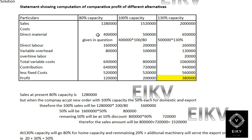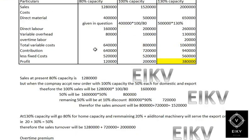Direct material at 80% capacity is $4,00,000. Converting to 100%: $4,00,000 × 100/80 = $5,00,000. For 130%: $5,00,000 × 130% = $6,50,000. All variable overheads such as direct labor and variable cost are computed in the same manner. When we take total variable cost, we get $6,40,000 for 80%, $8,00,000 for 100%, and $10,60,000 for 130%.